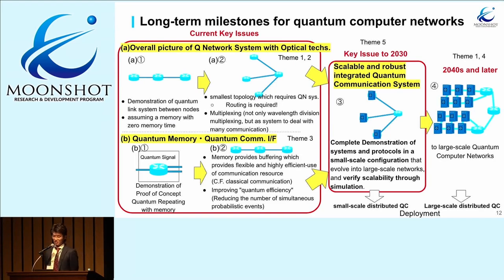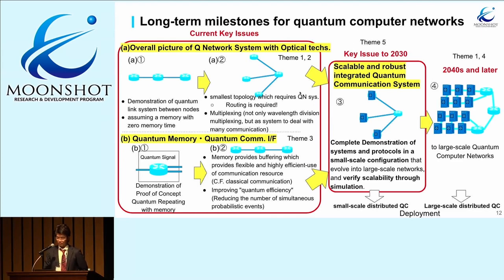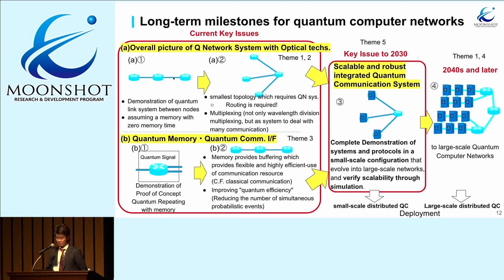This is our milestone. The key issue to 2030 is to realize the scalable and robust integrated quantum communication system, which can be evolved to a larger scale network. For that, we will demonstrate the complete system and protocol in a small-scale configuration and verify scalability through simulation. Currently, key issues are divided into two: handling quantum memory in the prototype, and the network hurdle. We start with just optical technologies to realize the overall picture of the quantum networking system, demonstrating quantum link systems between nodes, assuming quantum memory with zero memory time.